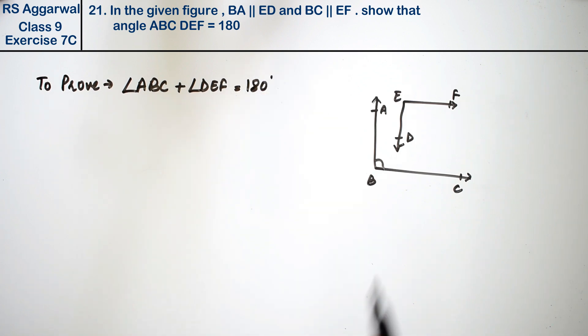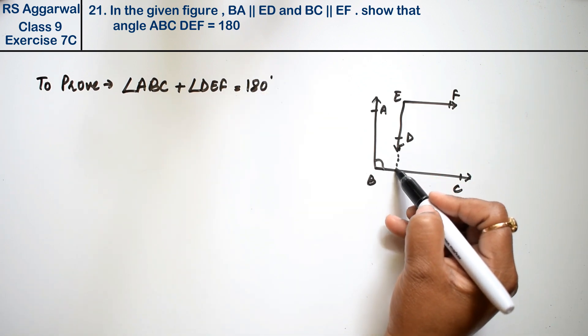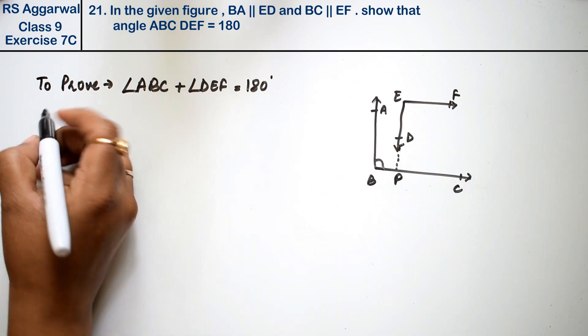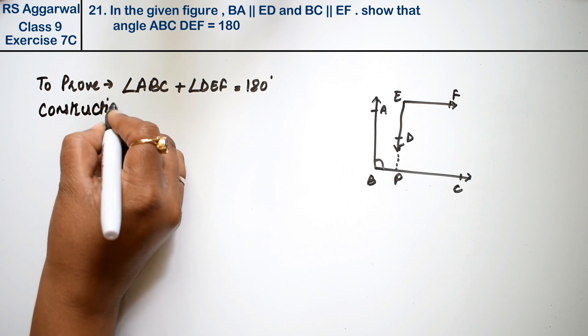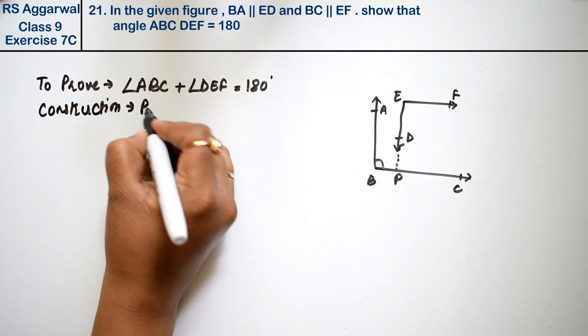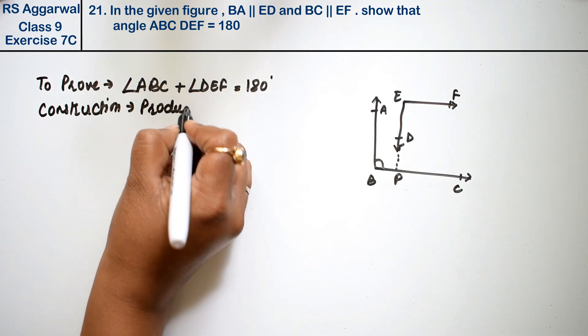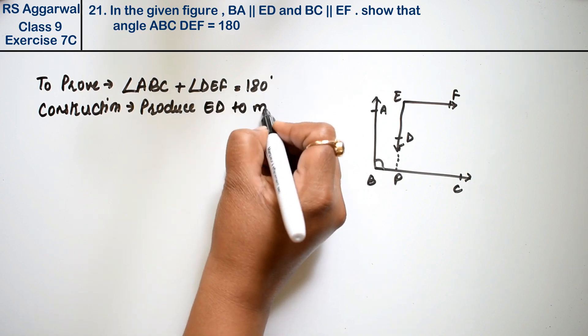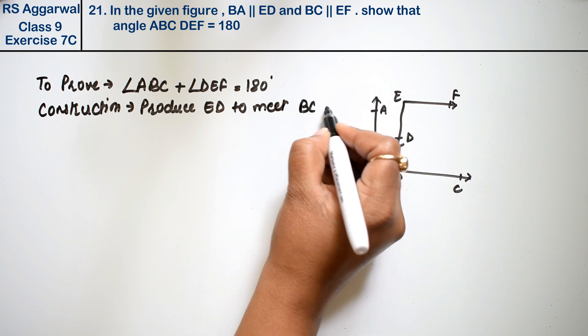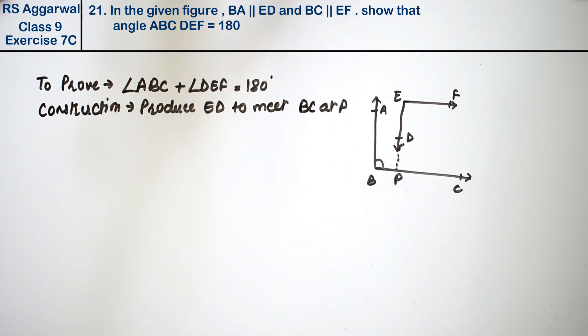So what do we do? We construct by producing ED to meet BC at point P.